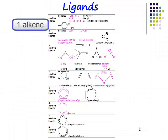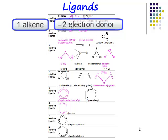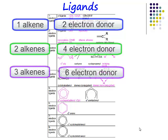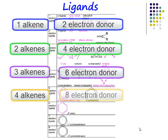Now if you've got one alkene, it's a two electron donor. If you've got two alkenes, it's a four electron donor. If you've got three alkenes, then it's a six electron donor. And if you've got four alkenes, then that's going to be an eight electron donor.